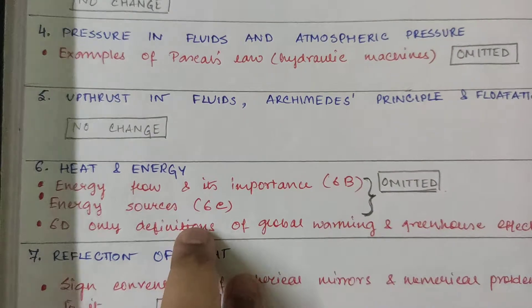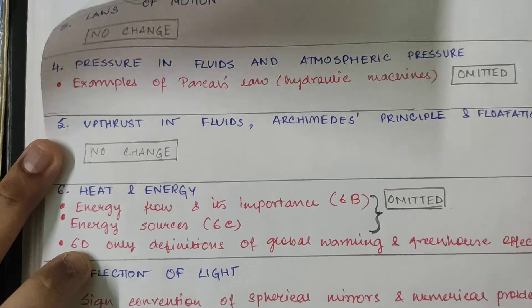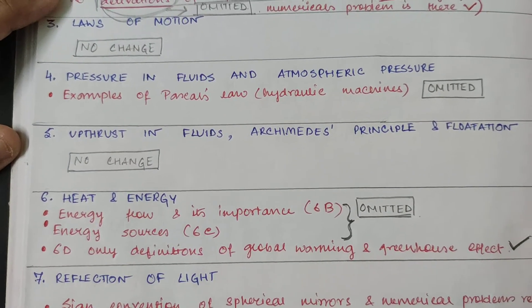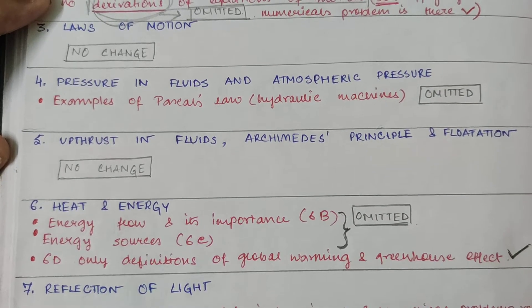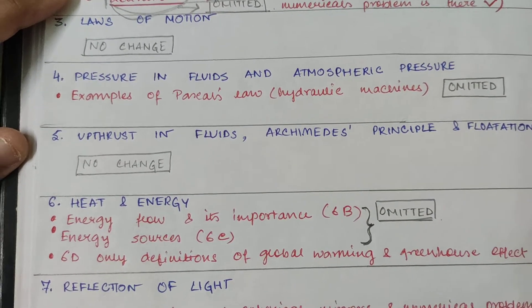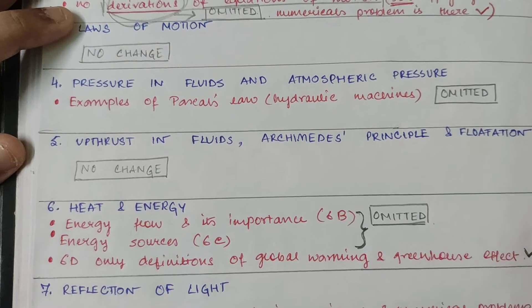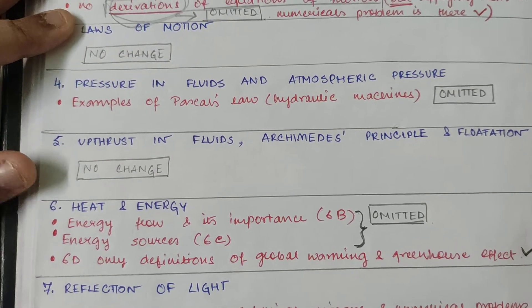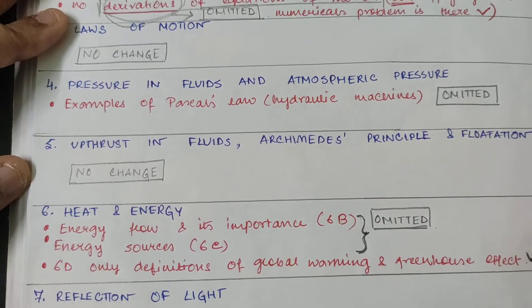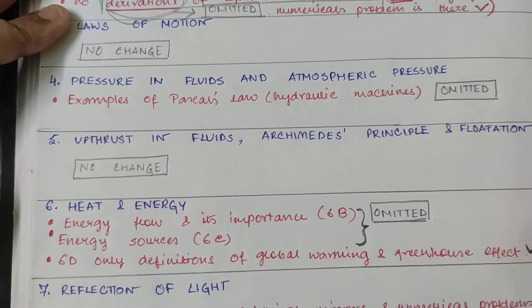Then you will find 6B, energy flow and its importance has been omitted. Energy sources has been omitted, 6C. From 6D only they have given, learn the scientific definitions of global warming and greenhouse effect. So only the definitions of global warming and greenhouse effect you will have to learn from 6D. No causes, no impacts of global warming and greenhouse effect. Nothing is there, only the scientific definitions of global warming and greenhouse effect. From 6D it is there. And 6B and 6C, energy flow and its importance, energy sources have been omitted. And 6A, full there. Concepts of heat, temperature, anomalous expansion, everything is there. So see again, we have done 6A, but we haven't done all this. So it's good, we haven't wasted time.